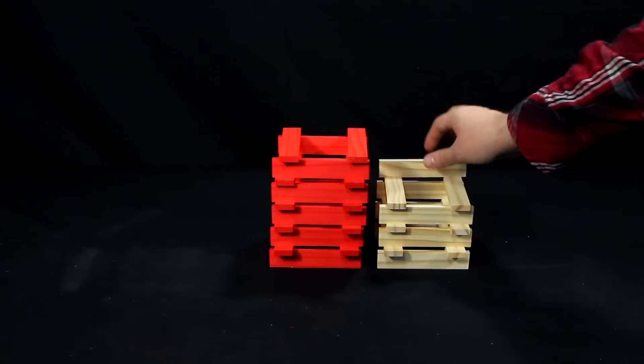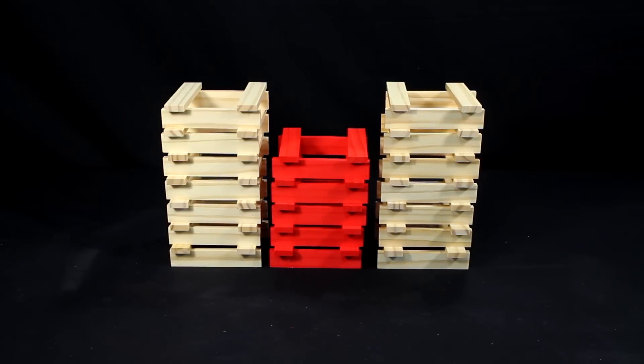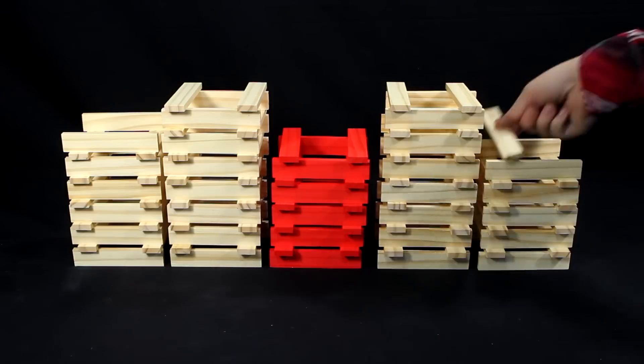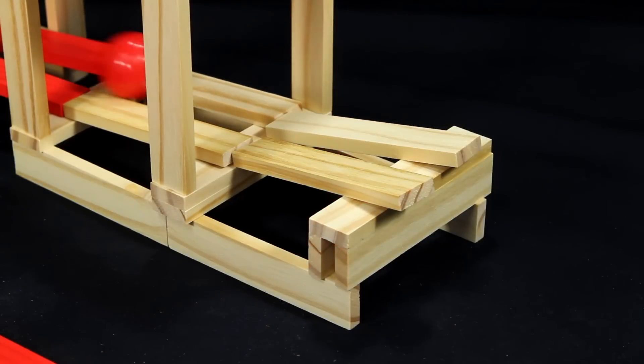Inside this set you'll get 100 natural colored city blocks and 20 red city blocks to build your coasters with, and two balls to roll down the tracks.